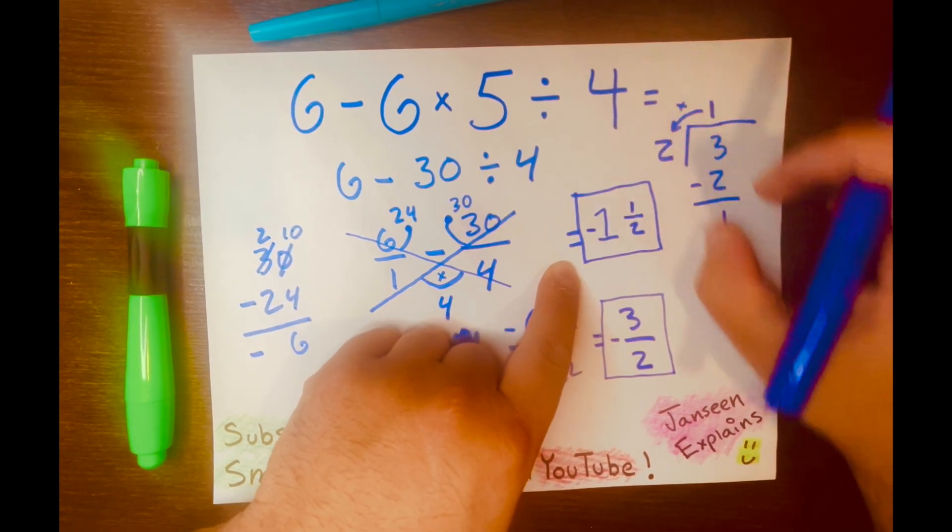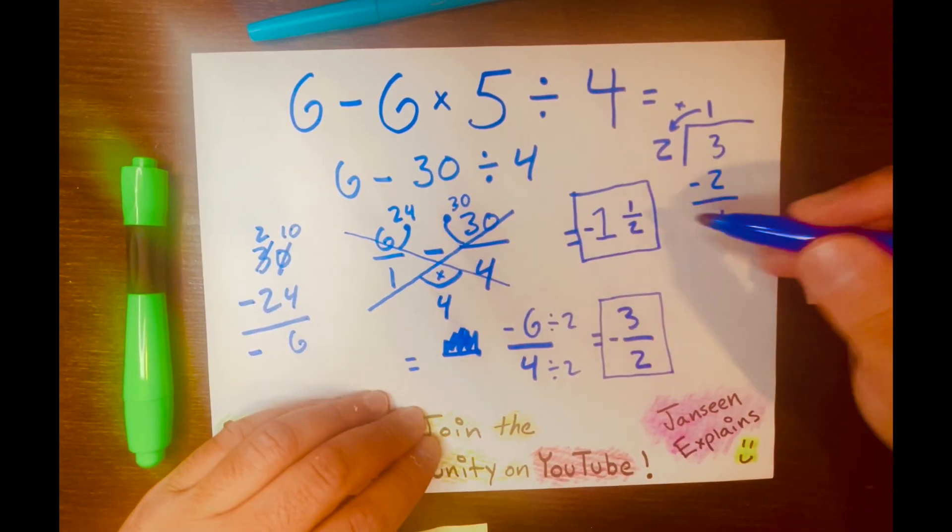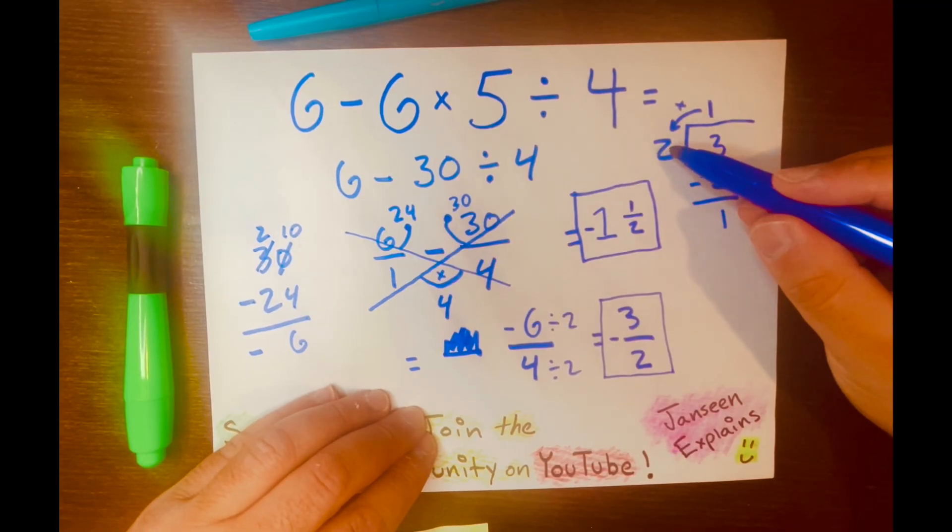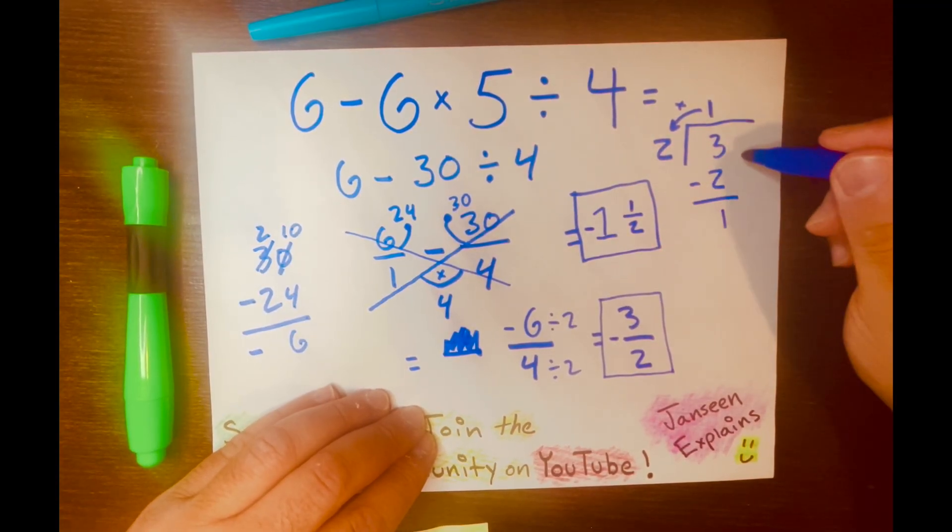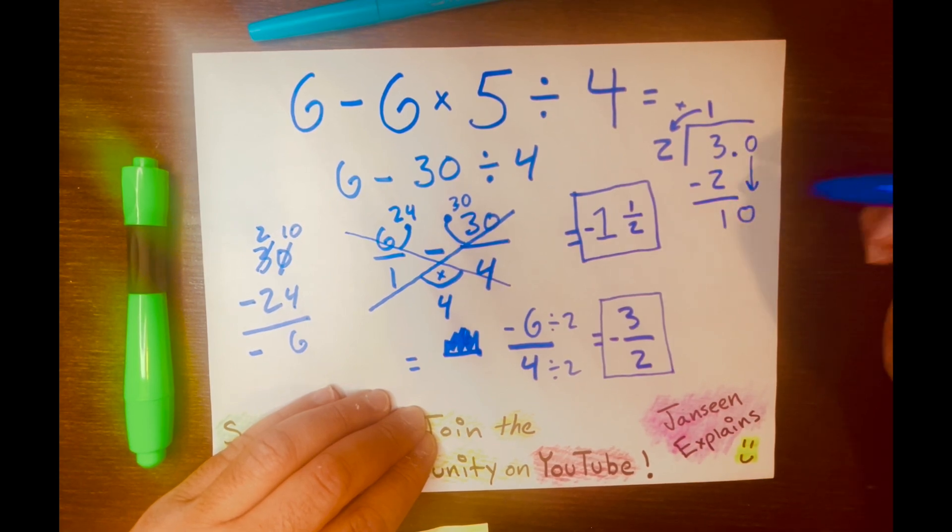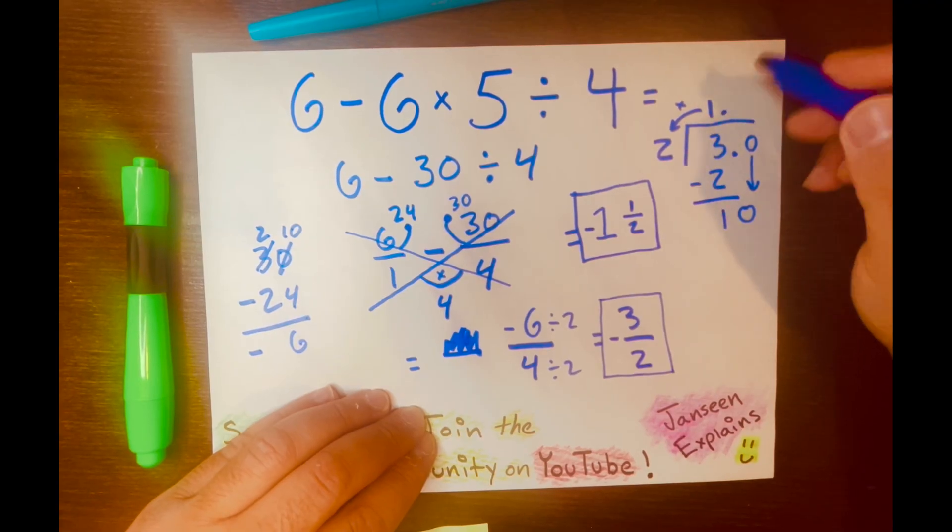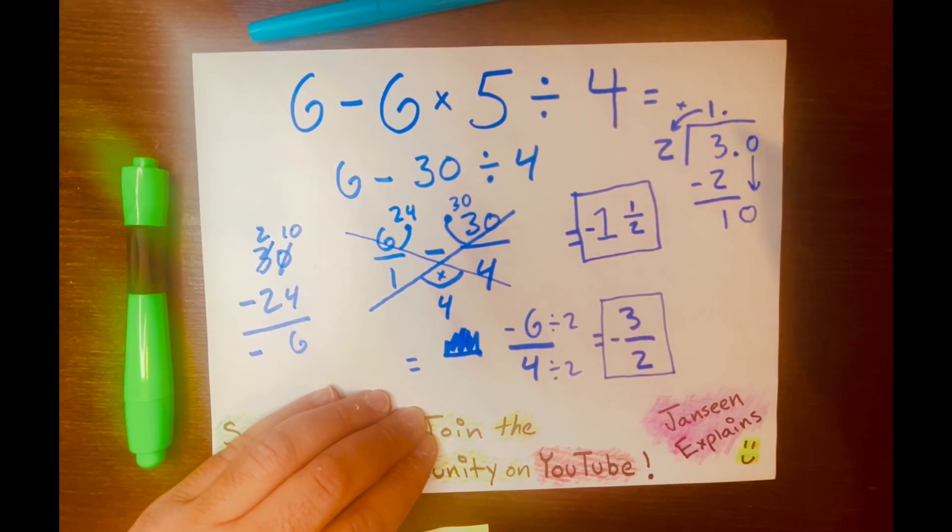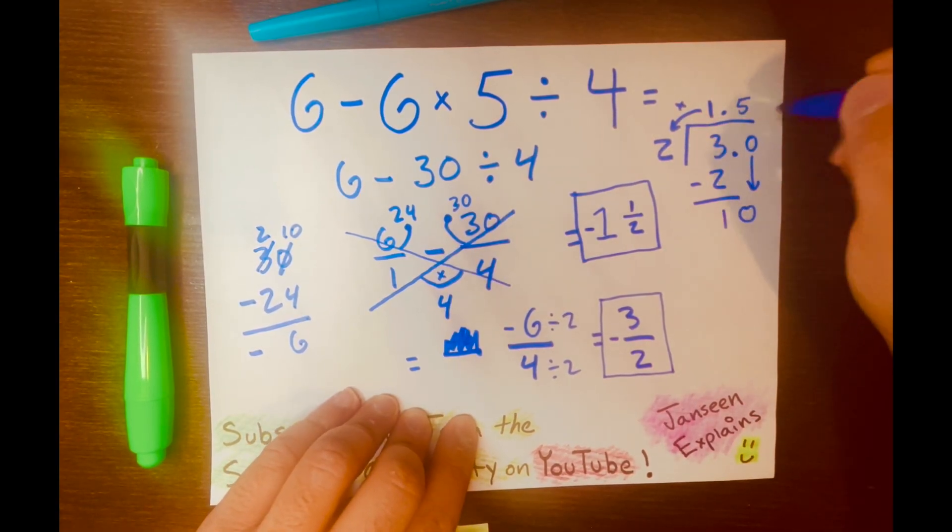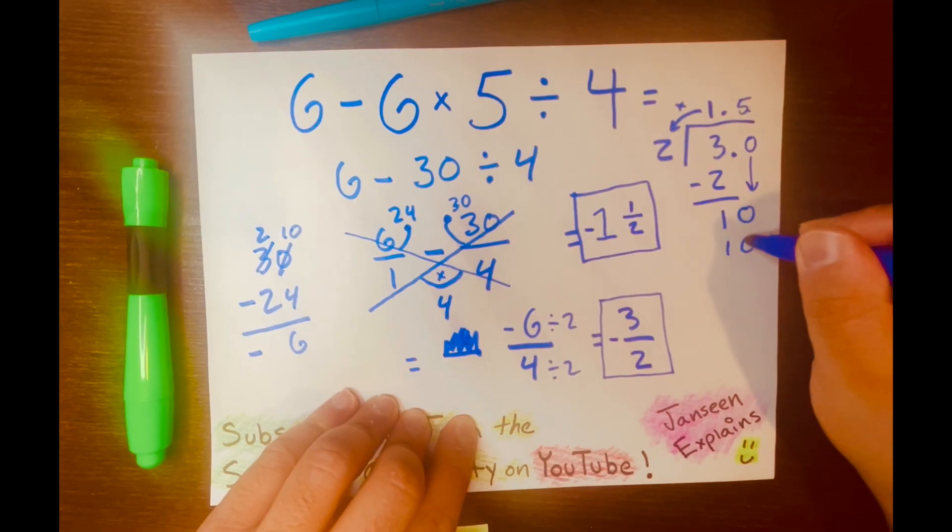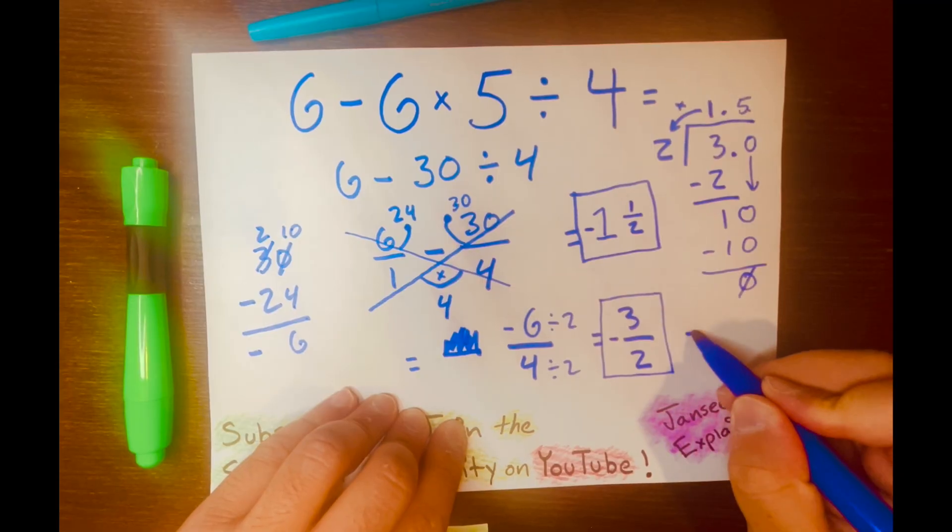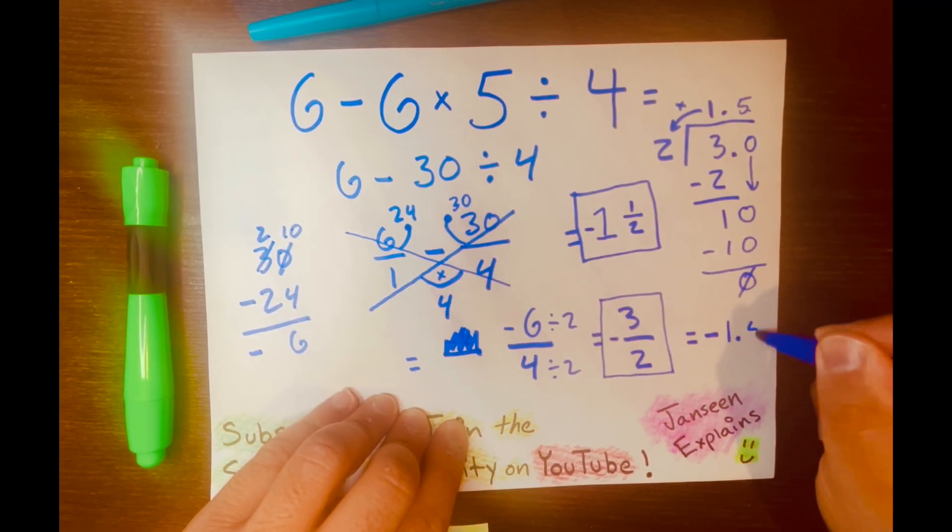And let's continue the long division to get our decimal answer. How many times can you fit 2 into 1? You cannot. So, we need to borrow 0, give it to the 1. 1 becomes 10. We add a decimal after the 1. And then, how many times can 2 fit into 10? 5 times. And 5 times 2 equals 10. And 10 minus 10 equals 0. So, your answer is negative 1.5.